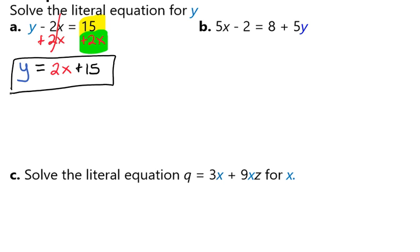Let's look at our next example. Here we have 5x minus 2 equals 8 plus 5y. And again, we're trying to get the y by itself. So we're going to begin by getting rid of our 8. So we're going to subtract, because that's the inverse operation that allows us to move it.